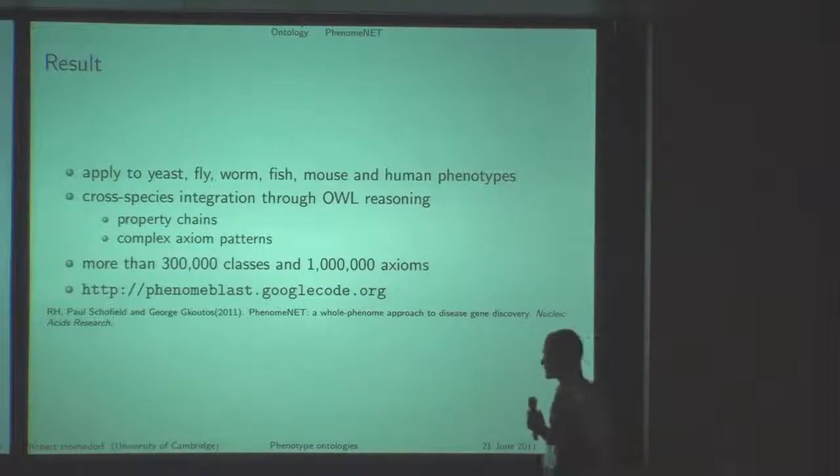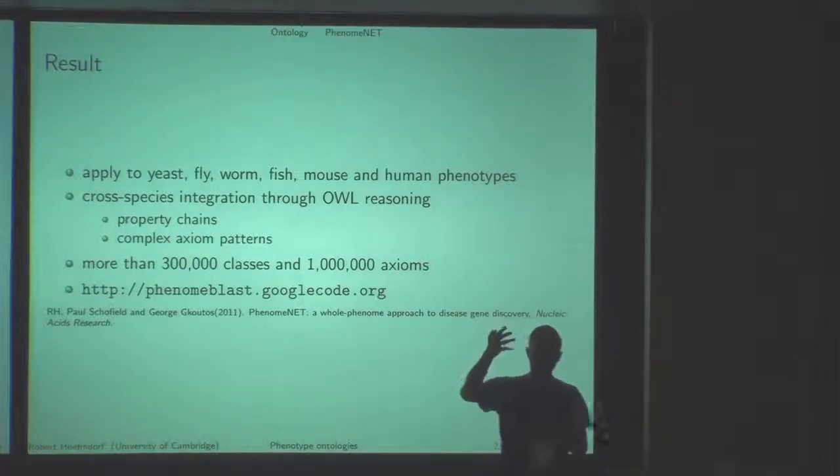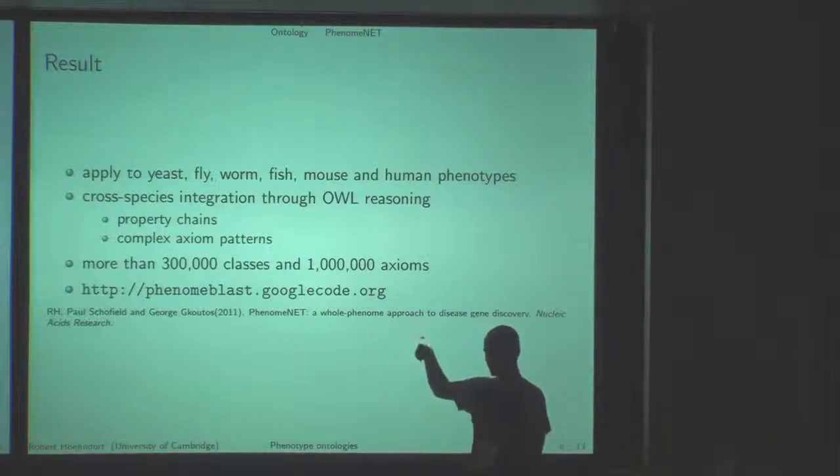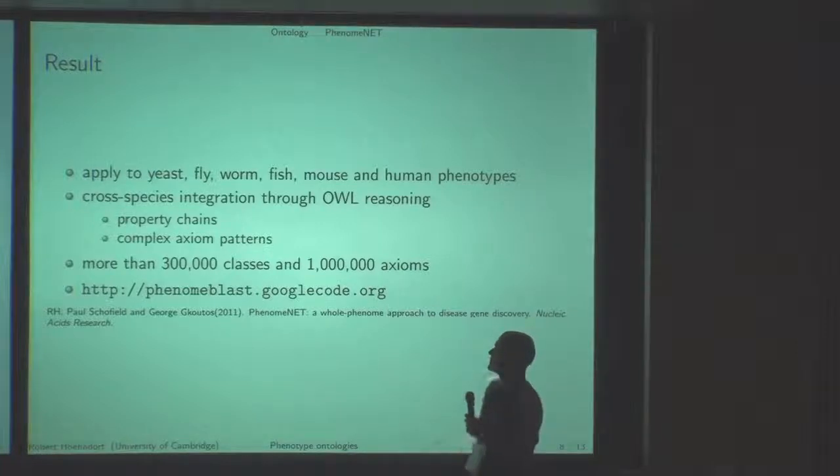What we have done is we have come up with these four patterns, formalized these phenotype ontologies and anatomy ontologies, combined many of them, and derived one big cross-species phenotype ontology which integrates them all for six species at least: